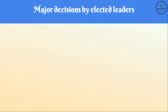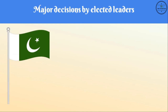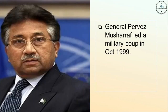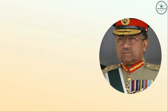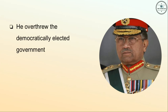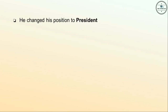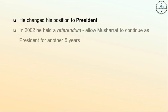The first point is: major decisions by elected leaders. Some countries like Pakistan do not follow this rule. In Pakistan, people formally elected a parliament and government, but the real power is with those who are not elected by the people. General Pervez Musharraf led a military group in October 1999 and overthrew the democratically elected government, declaring himself the Chief Executive of the country.